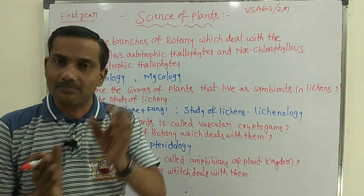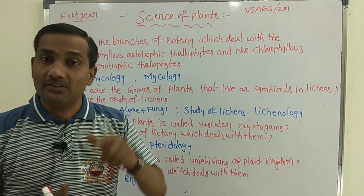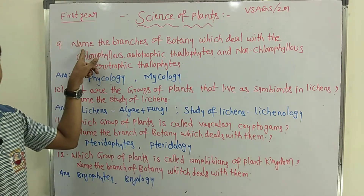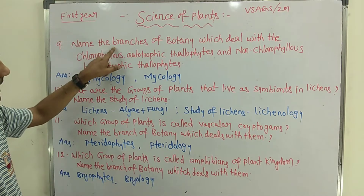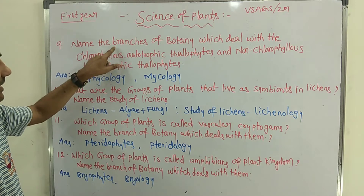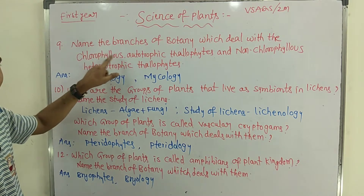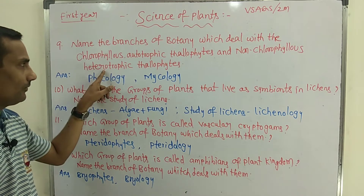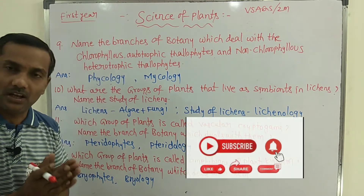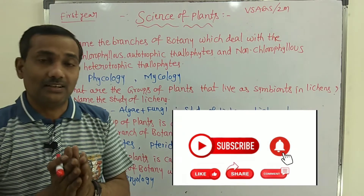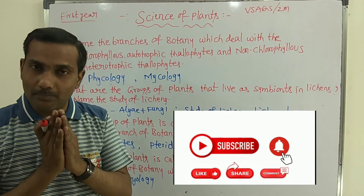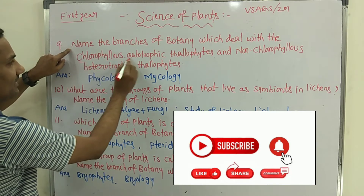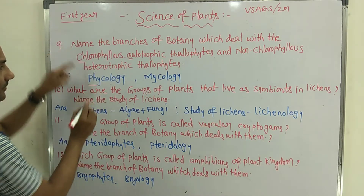I am going to stress the main key points which you have to write in the exam. The first is the ninth question: name the branches of botany which deal with chlorophyll-less autotrophic thalophytes and non-chlorophyll heterotrophic thalophytes. Chlorophyll-less autotrophic thalophytes — that is Phycology.